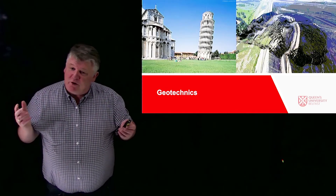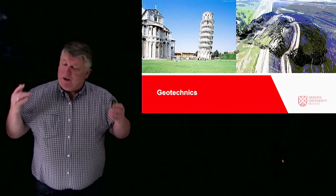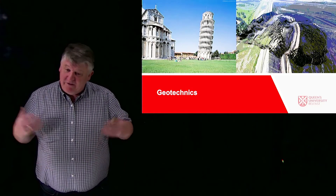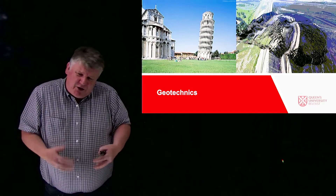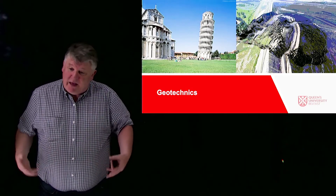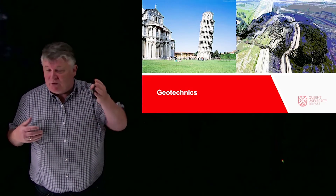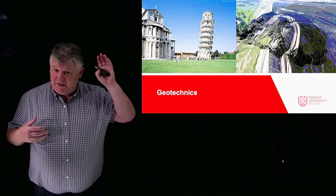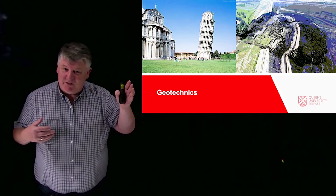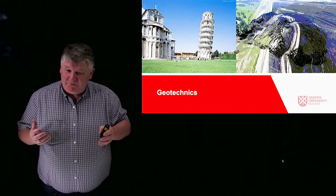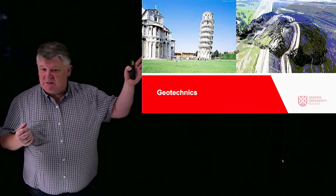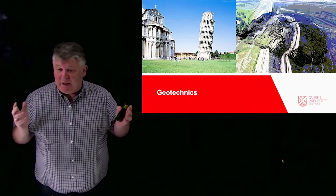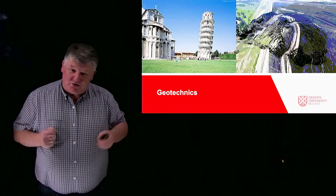One of our other core areas is geotechnics. We can do nothing on the planet without understanding what's on the ground. Everything that we do touches the ground, so we need to understand how that reacts to what we are building. Because what we don't want to happen is things like the Leaning Tower of Pisa, which was a foundation failure, or landslips. The photograph on the right is of a railway embankment failure at a mine in Australia.